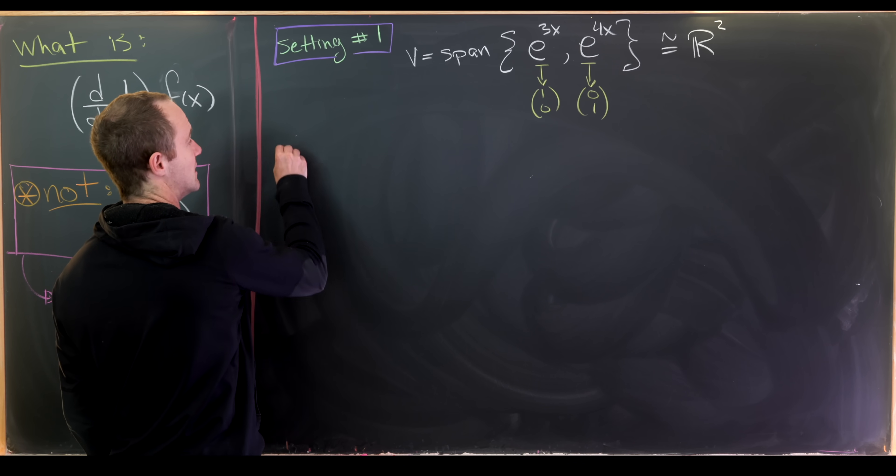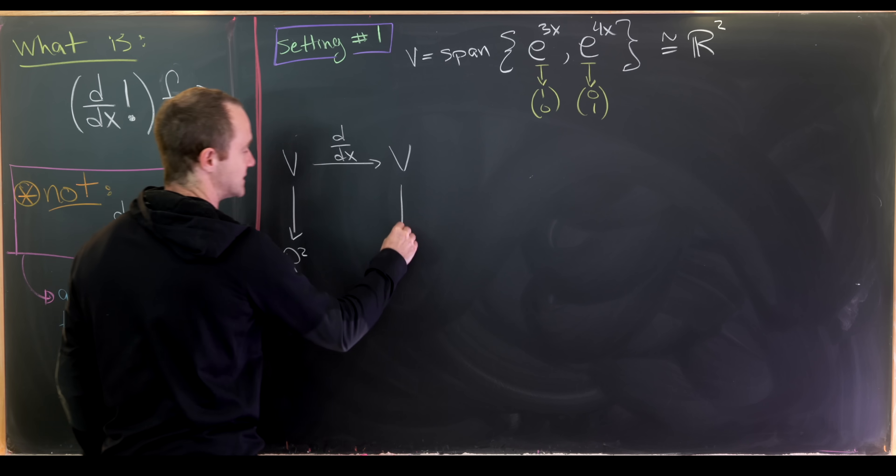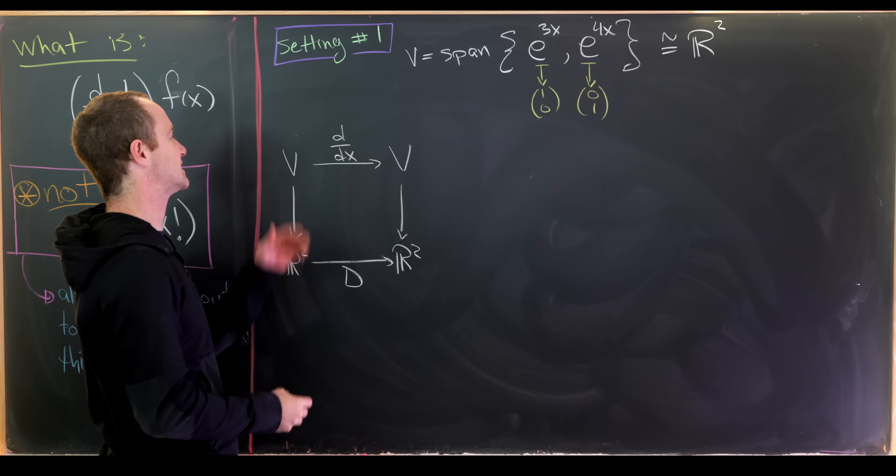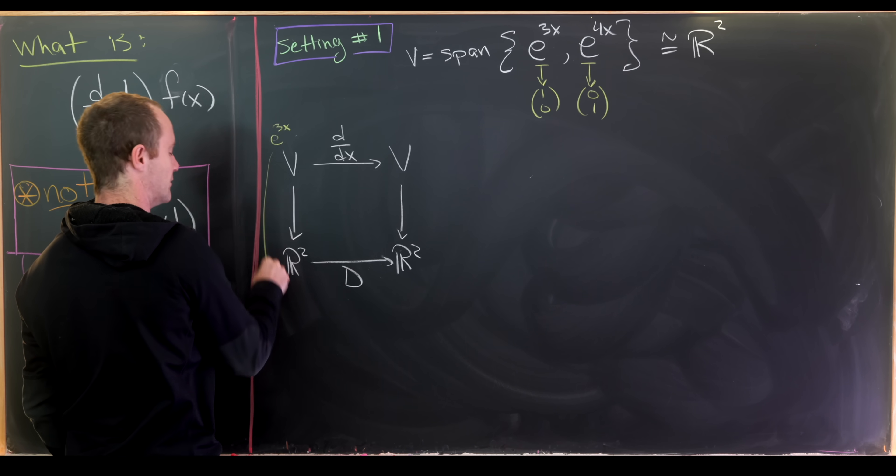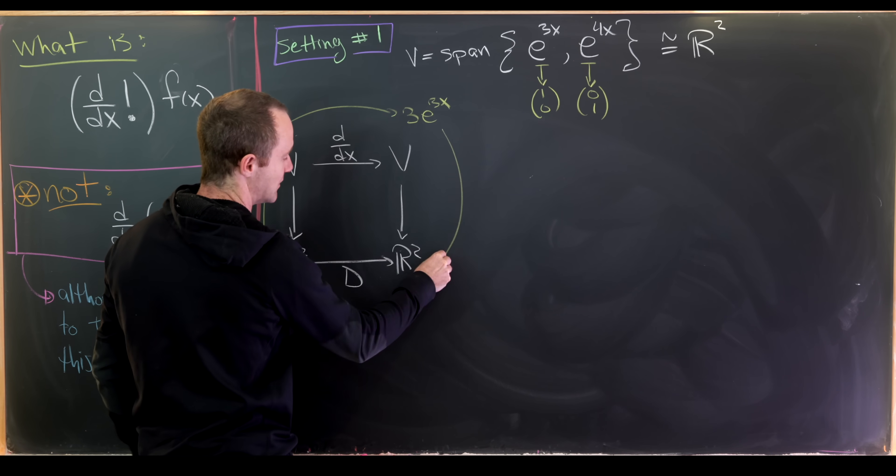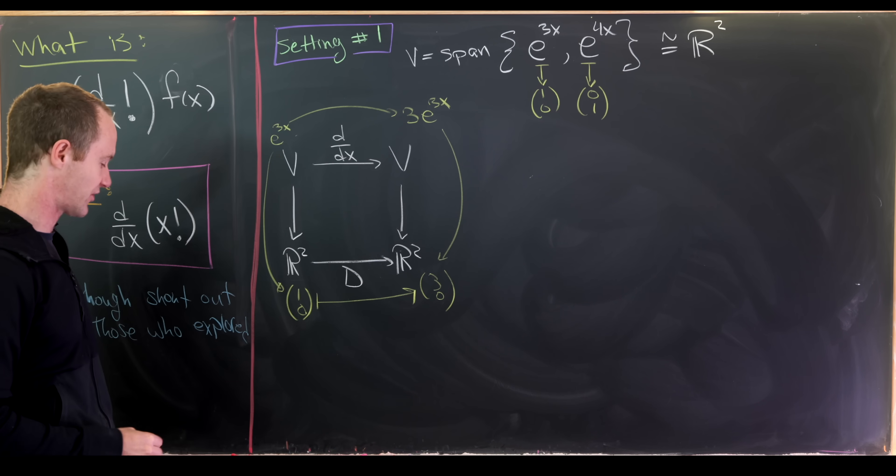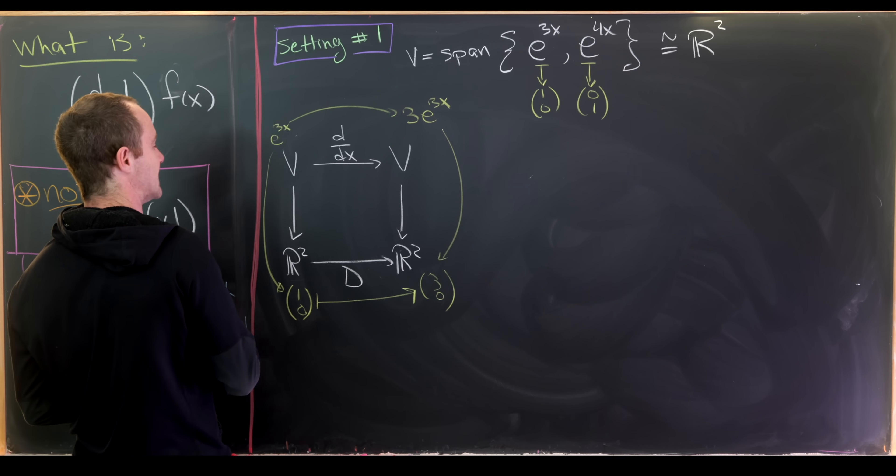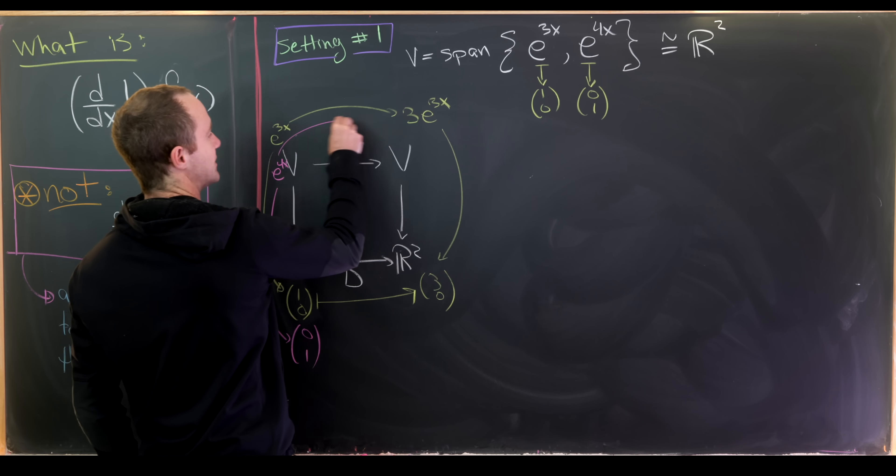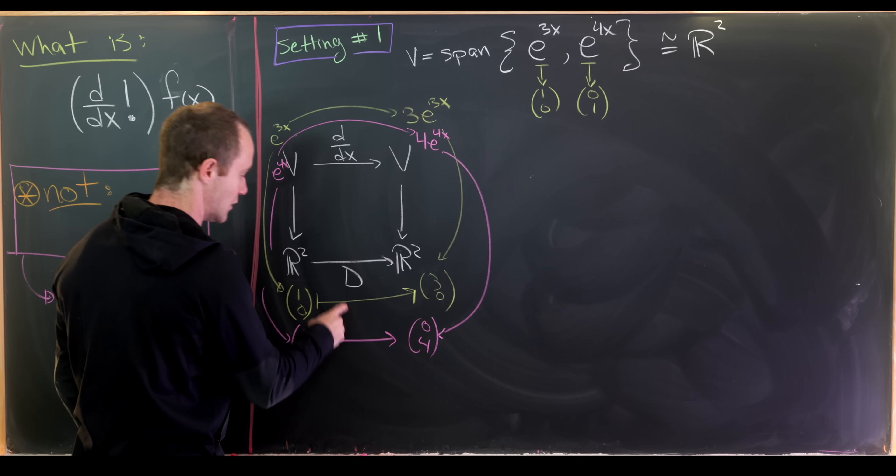Let's go from V to V via taking the derivative, and then we'll go down here to R². Then we'll go down here to R² as well, and then we'll define a matrix here called D. Let's trace our basis vectors through here. So e to the 3x will be sent to 1, 0. But in this direction it's sent to 3 times e to the 3x. But sending that down here that will be 3, 0. So putting this all together we see that the vector 1, 0 is sent to the vector 3, 0.